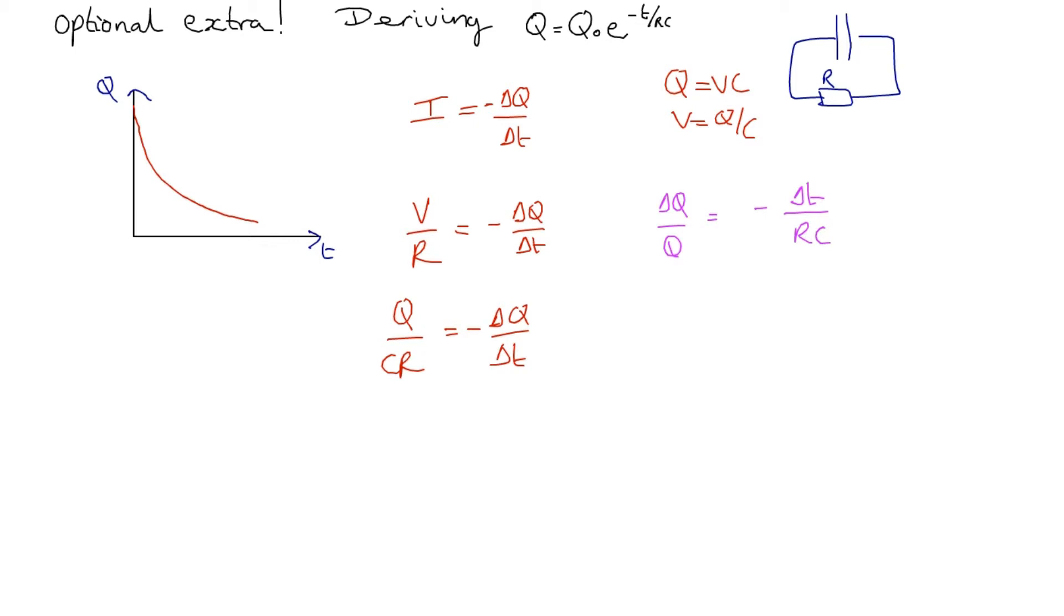We're going to write it making those intervals as small as possible so that we can do some integration. In the limit, we write dQ/Q equals -dt/RC, and then we're going to integrate.